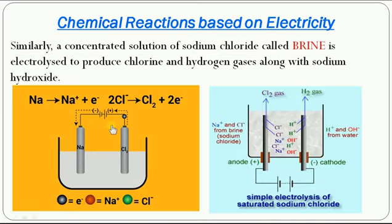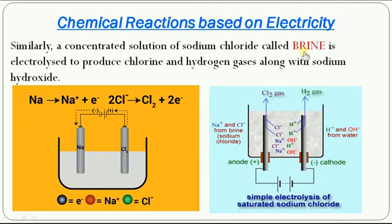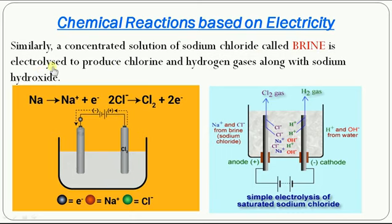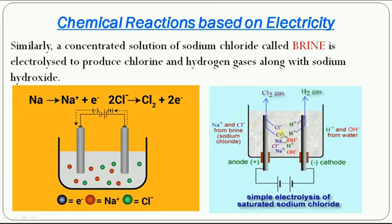Now, the sodium chloride solution — we call it brine. A saturated solution of sodium chloride is called brine, or we can say sea water, since sea water mainly contains sodium chloride. The concentrated solution of sodium chloride is called brine, or a saturated solution of sodium chloride. When it is electrolyzed — by passing electricity — we can decompose it to produce chlorine and hydrogen gas along with sodium hydroxide. You can see this picture: it is an electrolytic tank again. In the tank we have taken sodium chloride solution, meaning water mixed with sodium chloride.